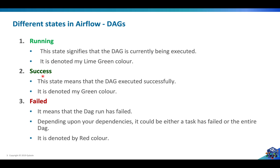The second state is success — it means that the DAG has been executed successfully, and it is denoted by this dark green color. The third state is failed — it means that the DAG run has failed. The DAG can fail due to a number of reasons: it can fail because some dependency failed, or any task failed in the DAG, or based on any condition specified in your DAG. It is denoted by this red color.